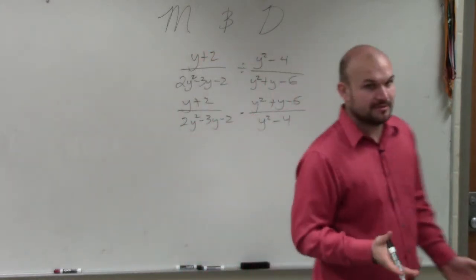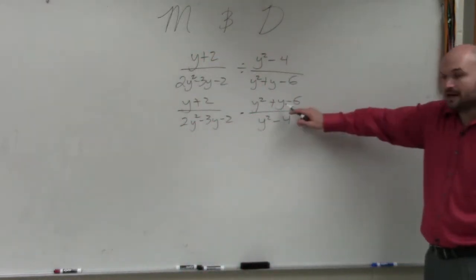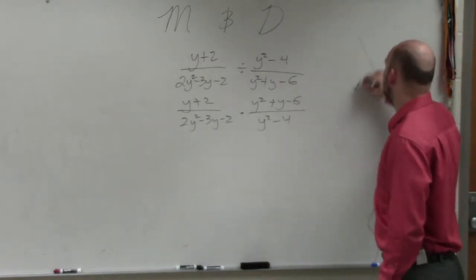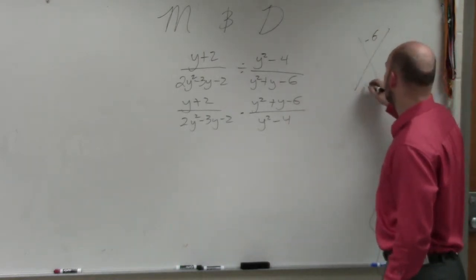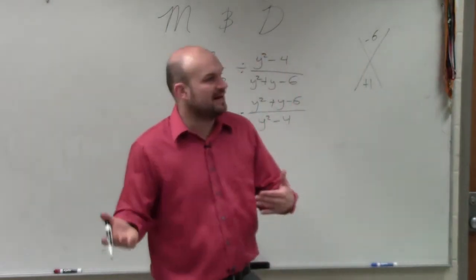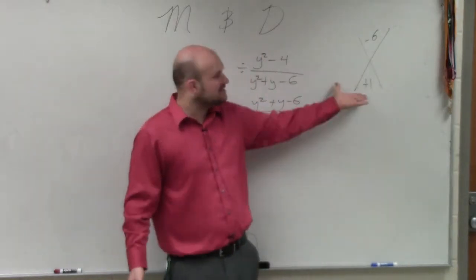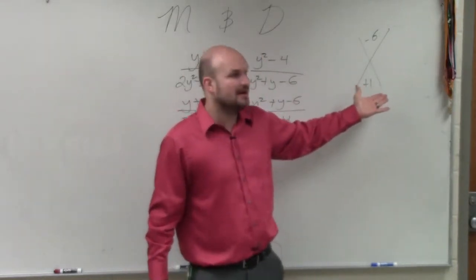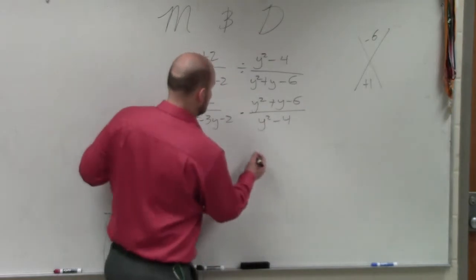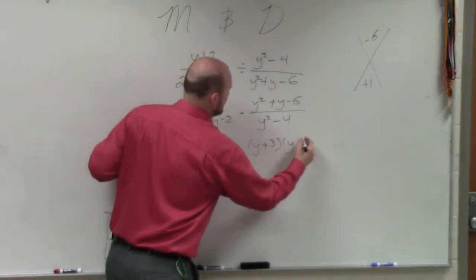Now, it just comes into factoring. I'm going to leave the hardest factoring technique to the end. Over here, we can use our diamond again. Negative 6 and positive 1. What two numbers multiply to give you negative 6, add to give you positive 1? When you're multiplying and getting a negative, one has to be negative, one has to be positive. Since they're adding to give you positive 1, you have positive 3, negative 2. So y plus 3 times y minus 2.